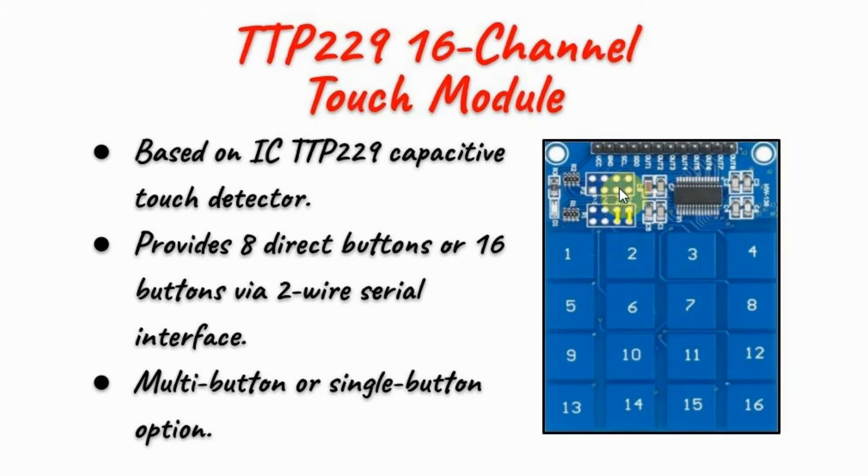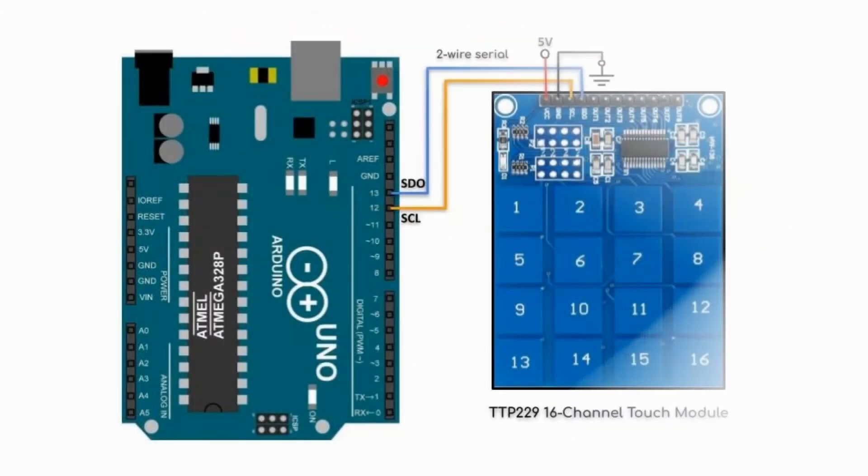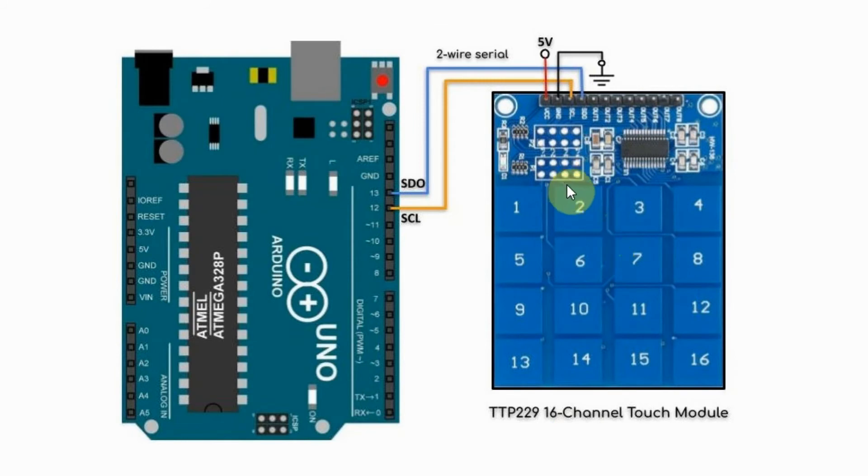Please refer to the datasheet of the TTP229 for more information. In this video, the module is interfaced with the Arduino using 2-wire serial connection, where the serial clock is connected to pin 12 and the serial data out is connected to pin 13.